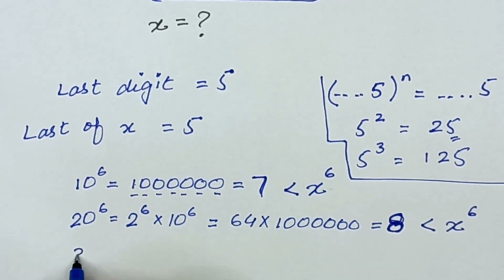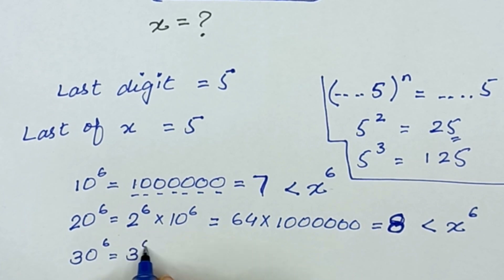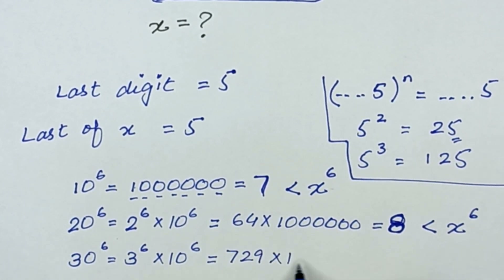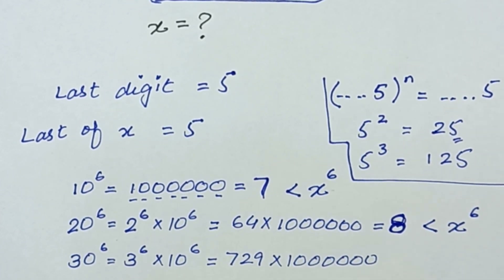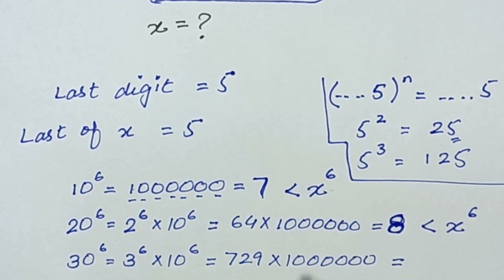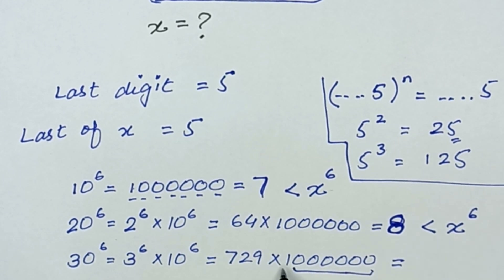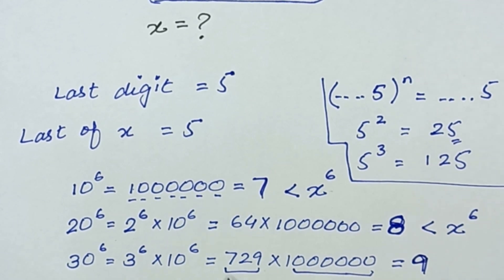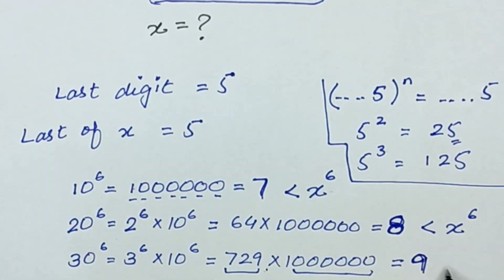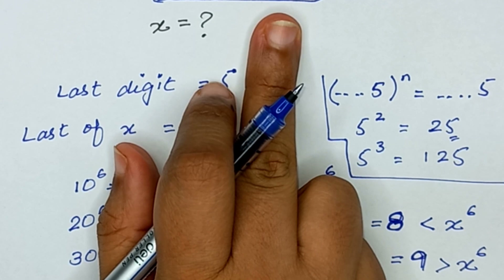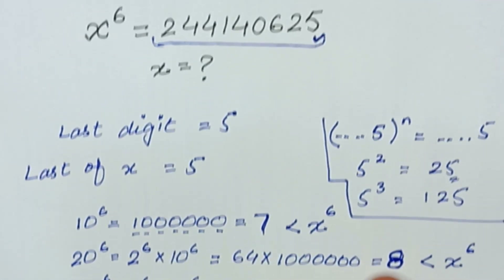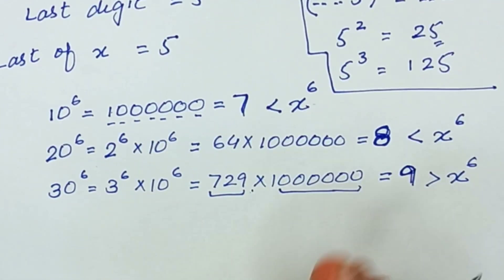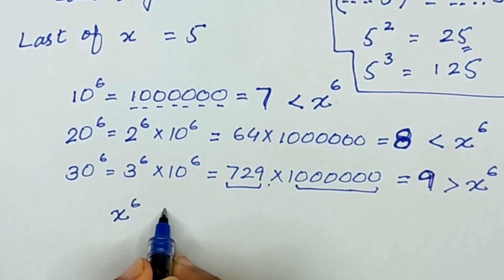Now we check 30 raised to the power 6, which equals 3 raised to the power 6 multiplied by 10 raised to the power 6. That is 729 times 10^6 — 3 digits from 729 and 6 zeros — giving a 9-digit number. 729 million is greater than 244,140,625, so x^6 is less than 30^6.